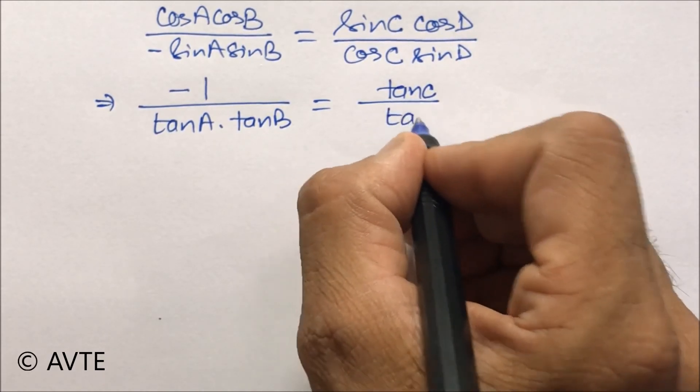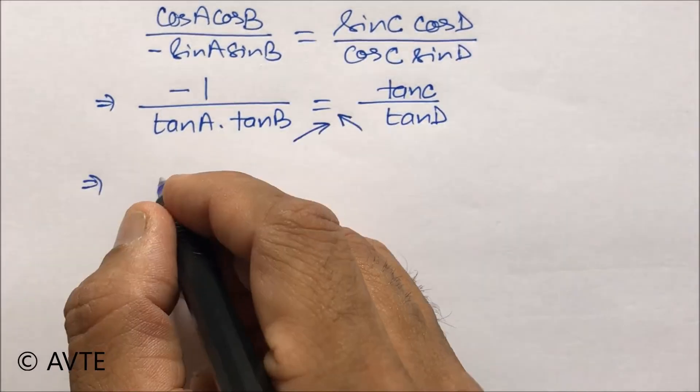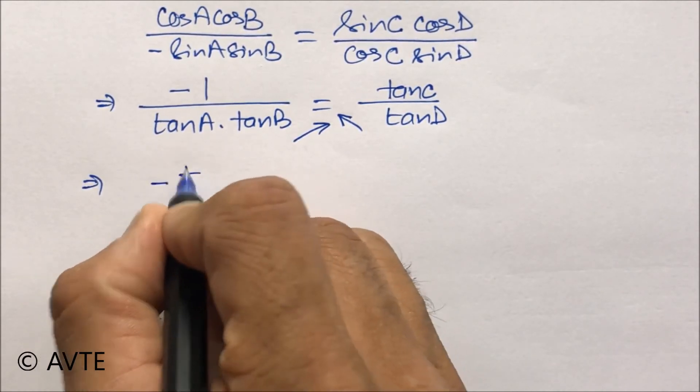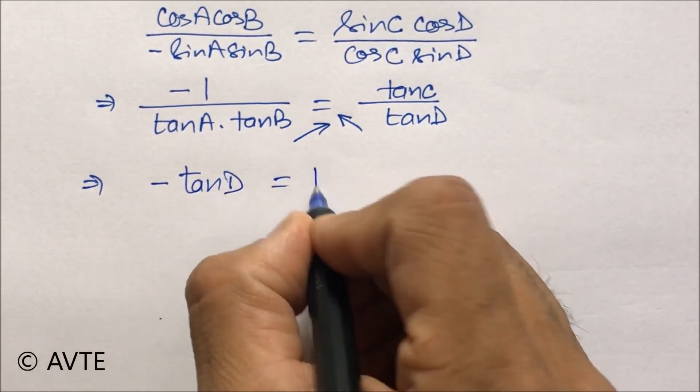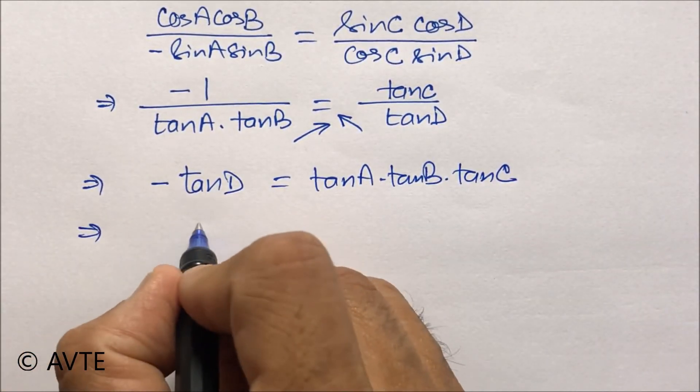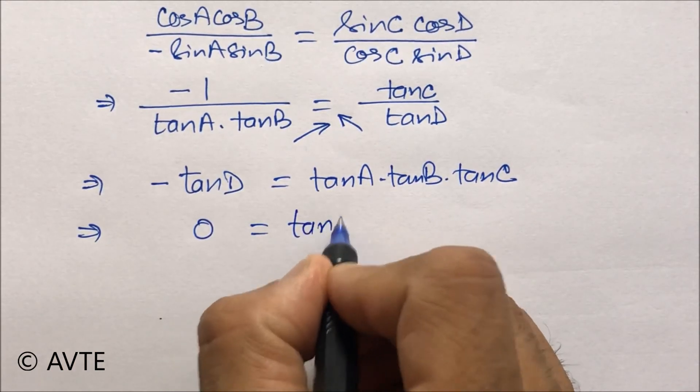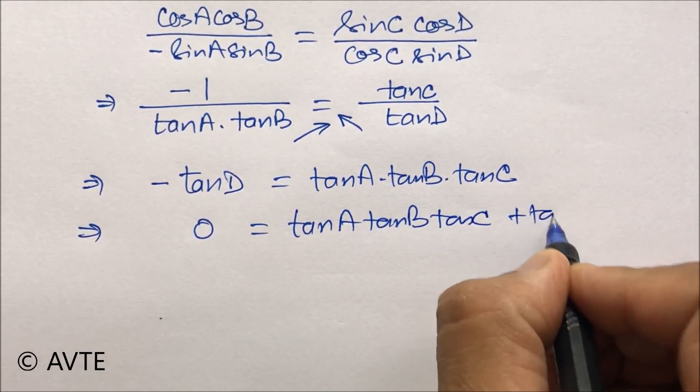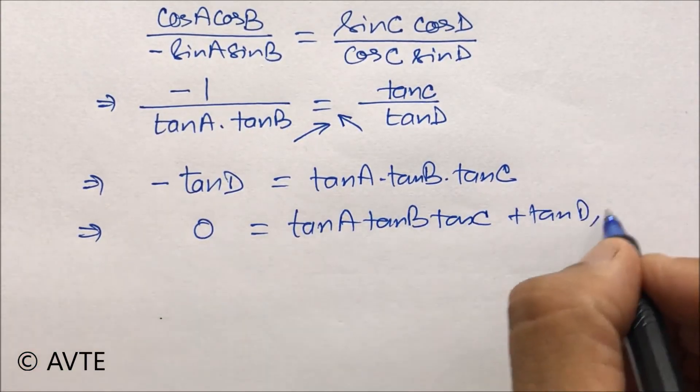By simply cross multiplying them, we can get the answer, and on transforming we get...